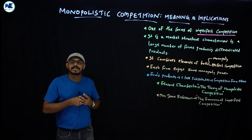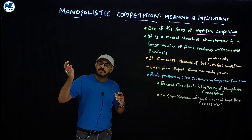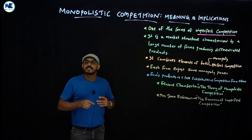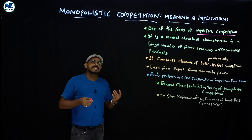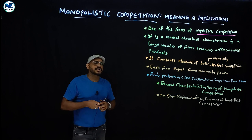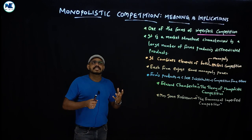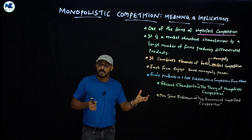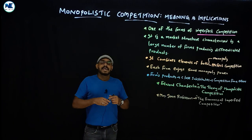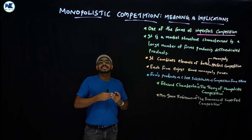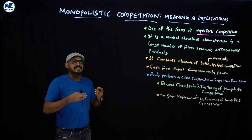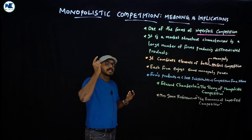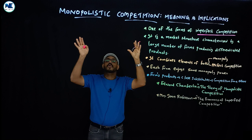The classical theory focused on perfect competition and monopoly, but in the real world monopolistic competition and oligopoly are more relevant. In the 1920s, the classical theory of price faced criticism because of unrealistic assumptions like homogeneous products, and gradually there were developments in price theory.